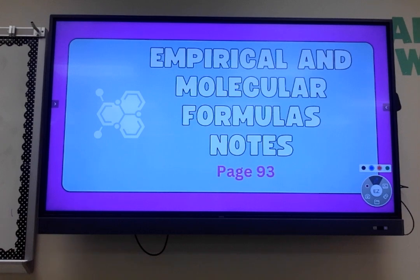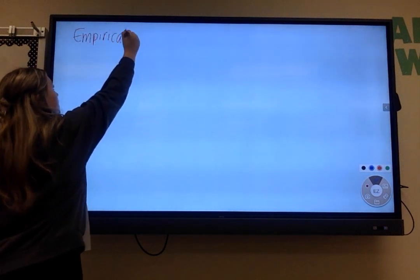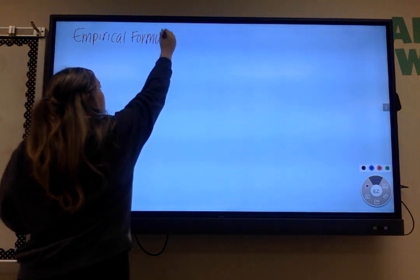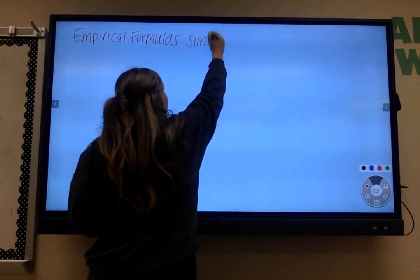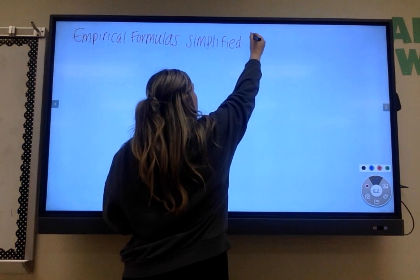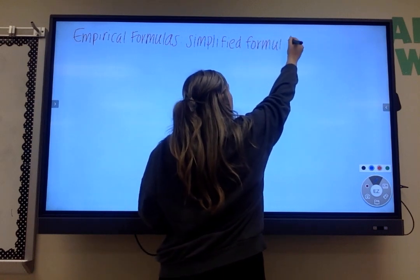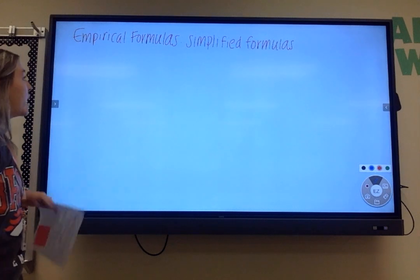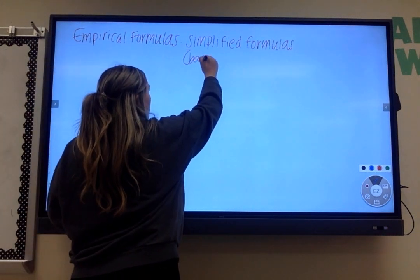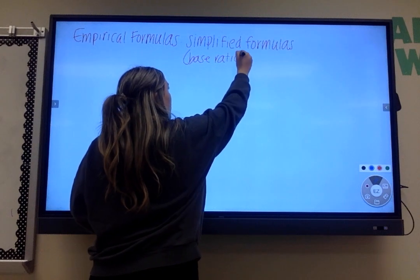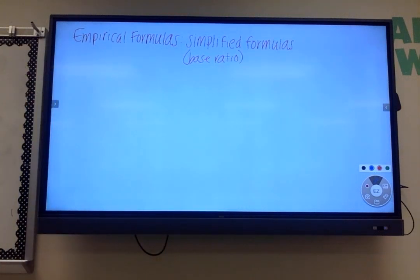We're going to start with empirical first. I want you to write that empirical formulas are just the simplified formulas. Another way of saying this is calling it the base ratio. The word ratio should look familiar from whatever math class you've taken. It's essentially a fraction - for every one thing you have a certain amount of another.